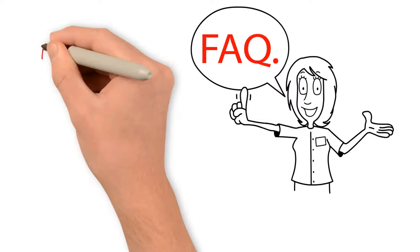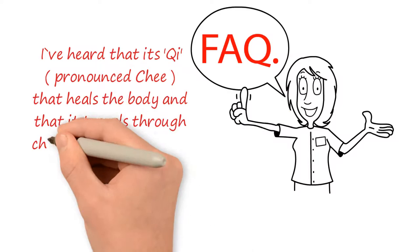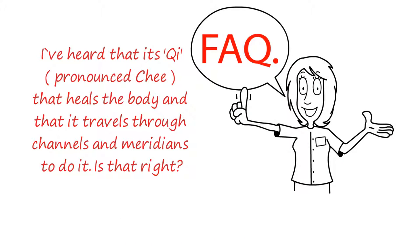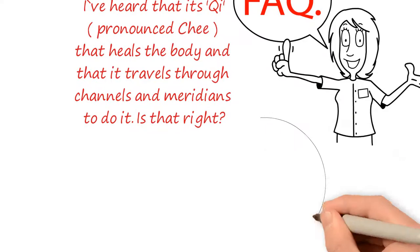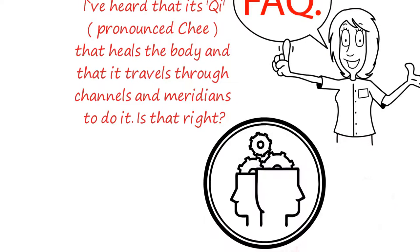Frequently asked questions. I've heard that it's Qi that heals the body and that it travels through channels and meridians to do it. Is that right? Qi is the word the Chinese use to describe the actions of the mechanisms of the body, depending on where in the body they come from. Channels and meridians are like a road map of the body that show us connections and relationships with other areas of the body.